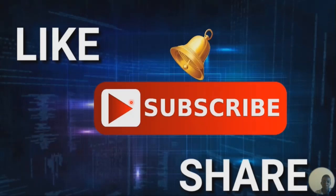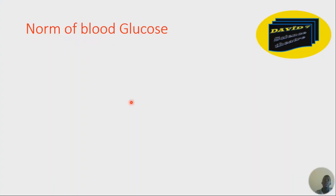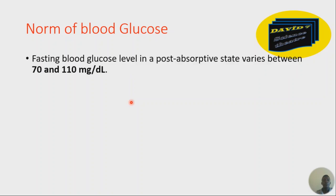We want to talk first about the norm of blood glucose — what is the set point, what are the normal levels when you're fasting. Blood glucose level in a post-absorptive state varies between 70 and 110 milligrams per deciliter.